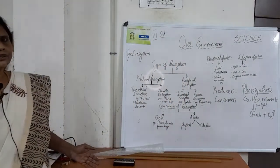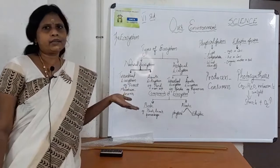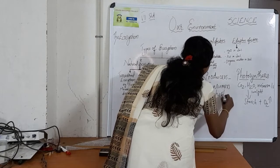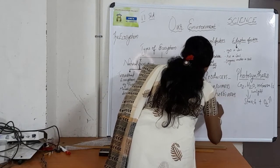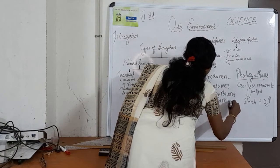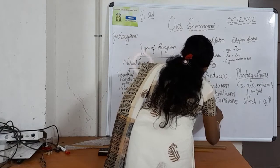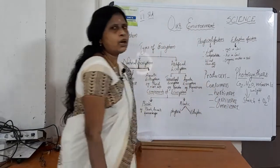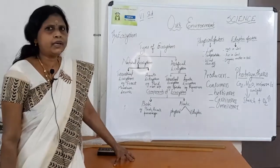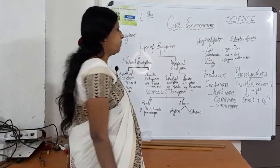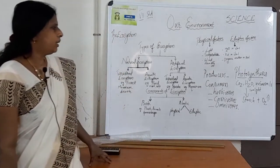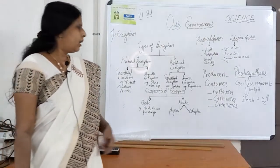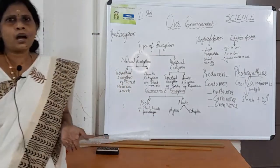Next, consumers — what are consumers? Organisms which eat plant products as well as plants and other animals are called consumers. They are divided into primary consumers (herbivores), secondary consumers (carnivores), and a third category: omnivores. Herbivores are animals which eat plants and plant products. Carnivores are animals which eat other animals — for example, lion and tiger. Omnivores eat both plant products as well as animals — for example, human beings, owls, and crows.